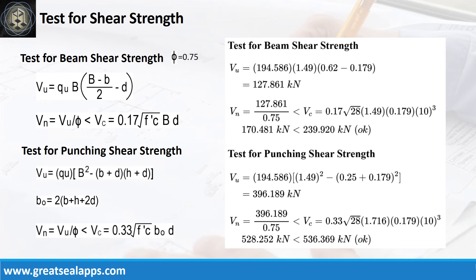The factored punching shear force is 396.189 kN. The nominal force is 528.252 kN, less than 536.369 kN concrete capacity.